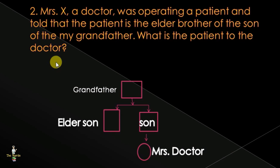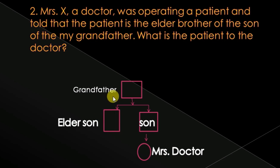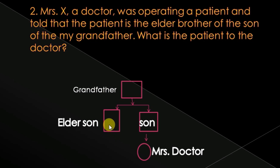Mr. X the doctor is saying the patient is the elder son of the son of grandfather. A son of grandfather means the doctor's father. So the patient is the elder son of the doctor's father, making the relation: father's brother. This is also easy to solve with a family tree.